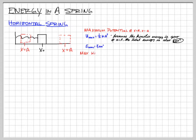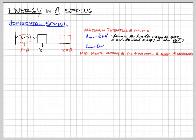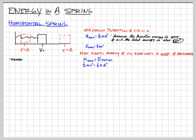My total energy is ½kA². My maximum kinetic energy occurs when we don't have any more potential energy, and that only happens when the spring is not stretched — which is the equilibrium position. So max kinetic energy is at x = 0, and this is always true for any simple harmonic oscillator. Because of conservation of energy, all that potential energy turns into kinetic energy, so ½mv² = ½kA², and from that we can find the maximum velocity.